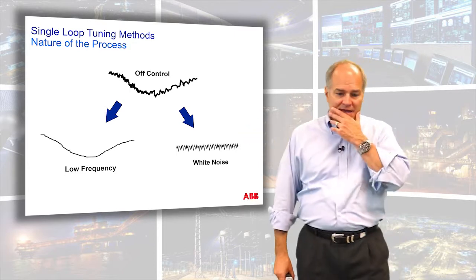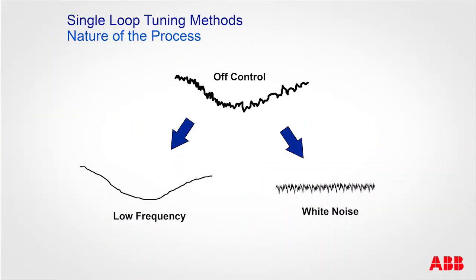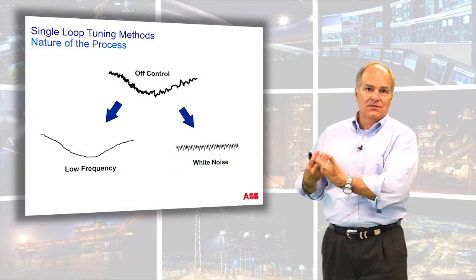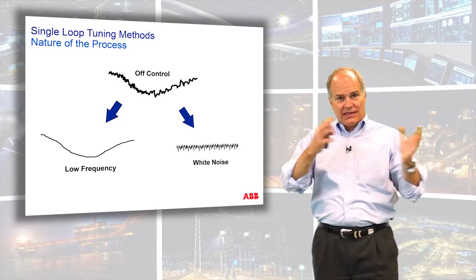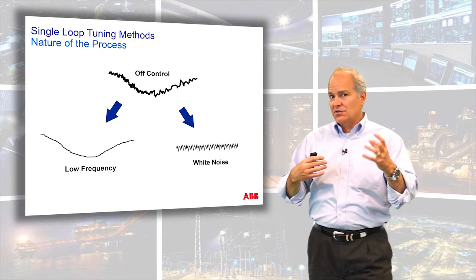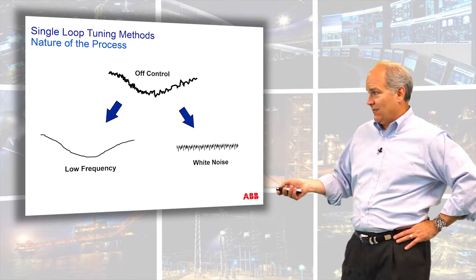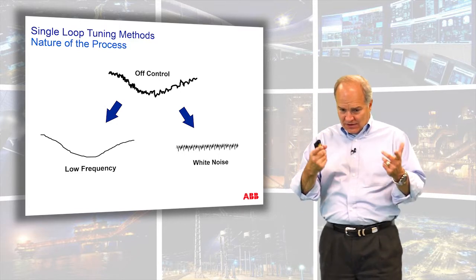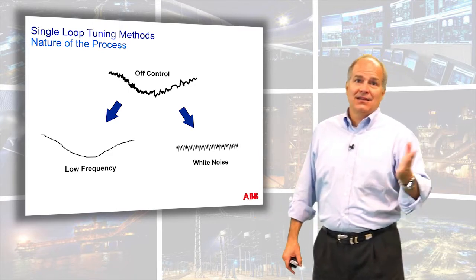Now let's step back and look at a signal that just ebbs and flows. Can you deconstruct it in your mind? If this is my signal off control and I were to remove the noise, here's the noise and here's the low frequency component. If you add those back together, you can get the total signal. By deconstructing the signal into low frequency and noise components, we get closer to identifying what control can deal with. Control is designed to fix the low frequency — not the noise.